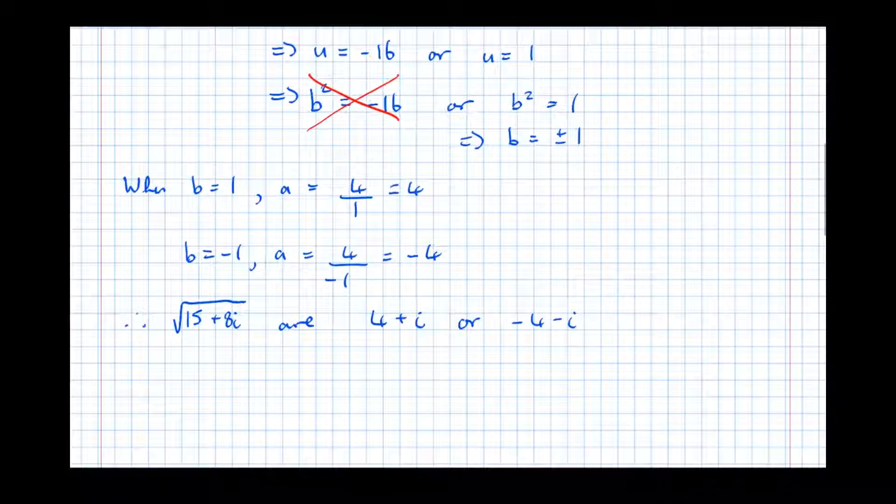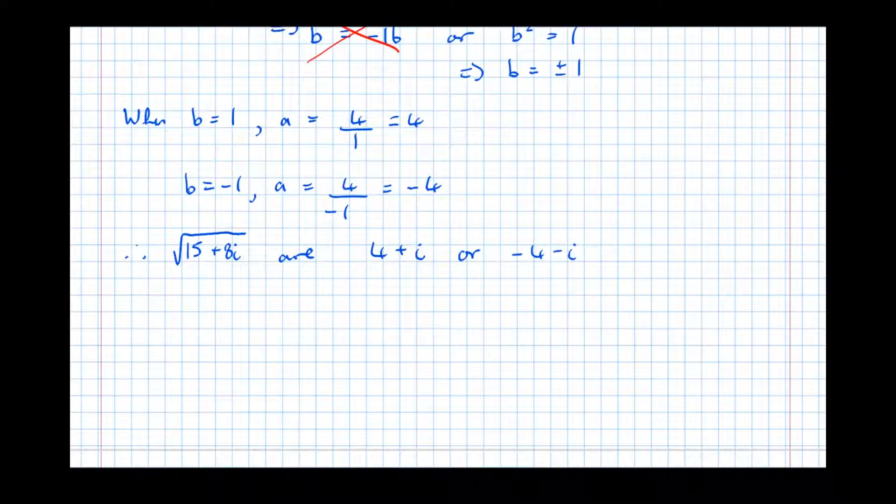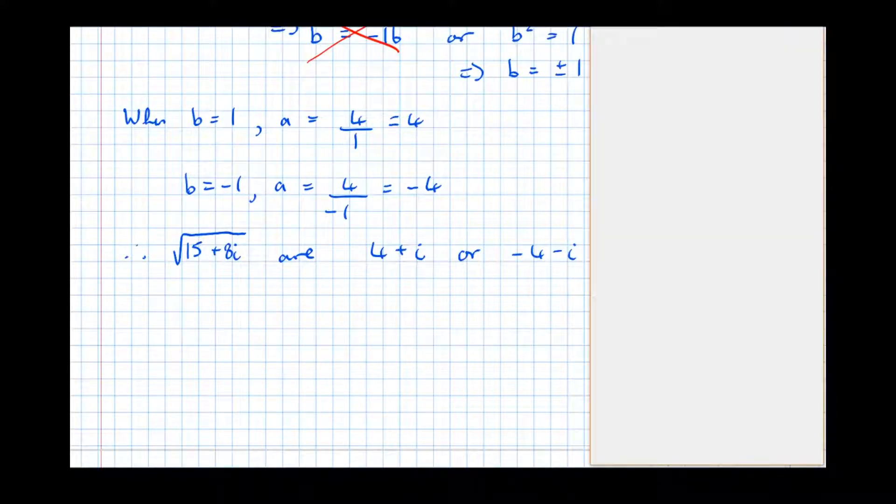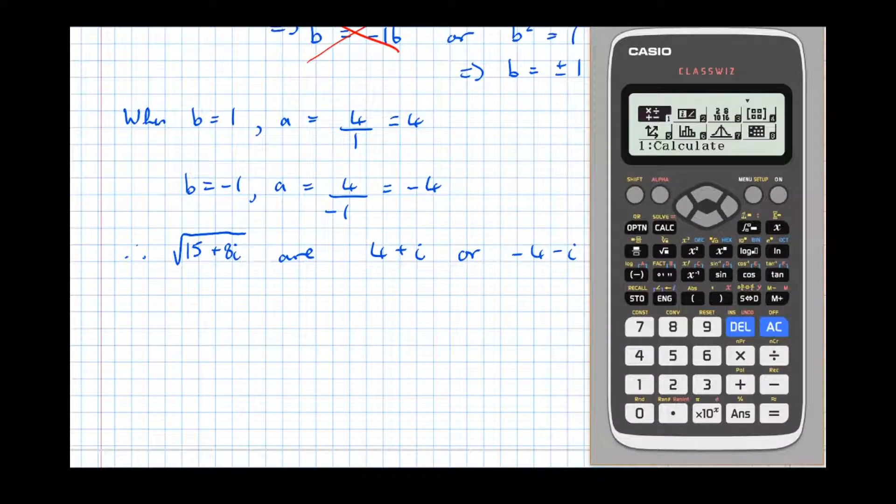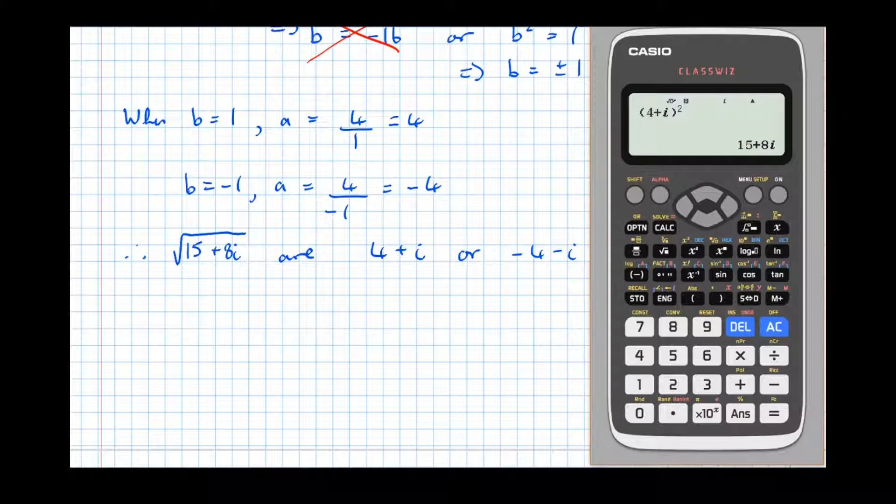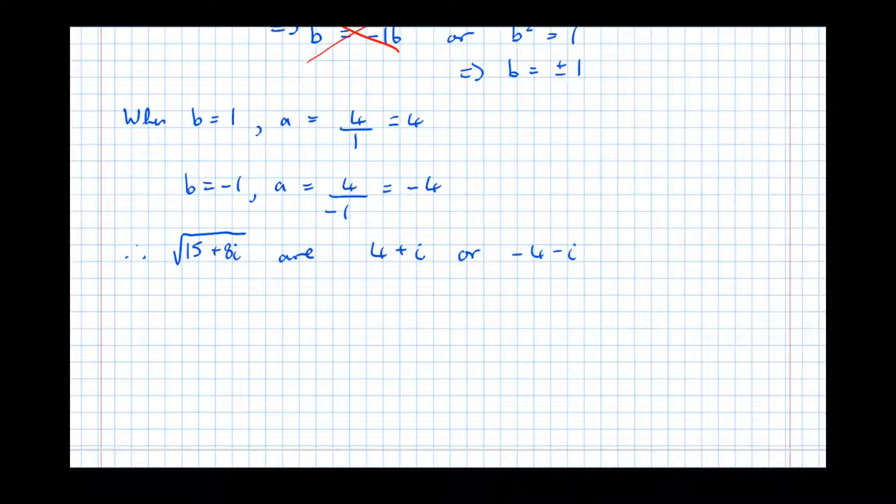And let's just test that on a calculator. Let's see if that works. So getting the calculator up and putting it in complex mode, which is that one there, mode 2. Let's do 4 plus i - i is just above this n button. 4 plus i squared is indeed 15 plus 8i. Let's try the negative. Negative 4 minus i squared is also 15 plus 8i.